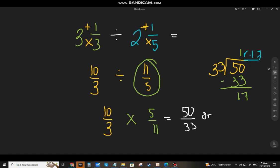The quotient will be the whole number and the remainder will be the numerator, and the divisor will be the denominator. So for the question 3 and one-third divided by 2 and one-fifth, the answer is 50 over 33 or 1 and 17 over 33.